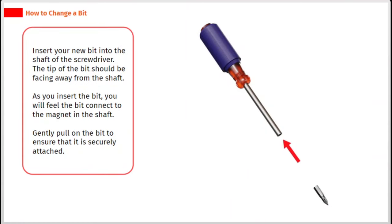Insert your new bit into the shaft of the screwdriver. The tip of the bit should be facing away from the shaft. As you insert the bit, you will feel the bit connect to the magnet in the shaft. Gently pull on the bit to ensure that it is securely attached.